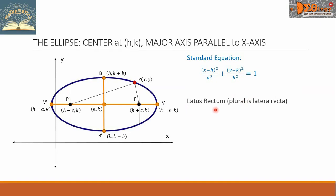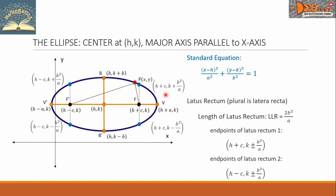Next is the latus rectum. There are two latera recta, and these are line segments. The length of each latus rectum, denoted by LLR, equals 2B² over A. Each latus rectum has endpoints with coordinates: H plus C, K plus B²/A and H plus C, K minus B²/A. The other pair of endpoints has coordinates H minus C, K minus B²/A.